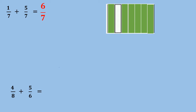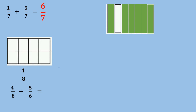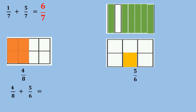We have another operation: we have to add 4 over 8 plus 5 over 6. First of all, we look at the two denominators — they are not equal. We have 8 as the denominator of the first fraction and 6 as the denominator of the second fraction, so we cannot start the operation immediately. We have to have the same denominator in both fractions. As long as the denominator is not equal, we cannot add them until we make them have the same denominator.